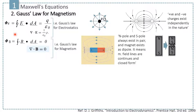Similarly to Gauss's law for electrostatics, we can write the equation for Gauss's law for magnetism, and that is: the total magnetic flux through any closed surface is equal to zero. What does this mean — zero?